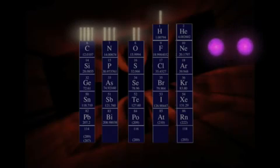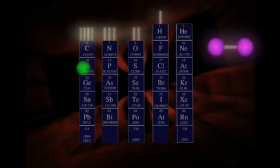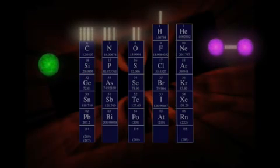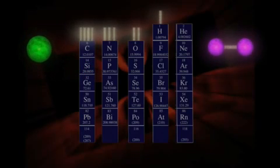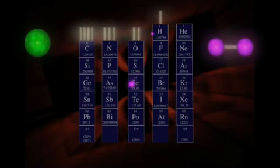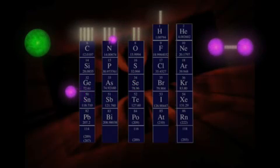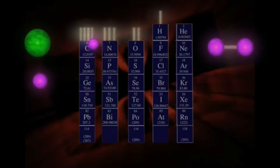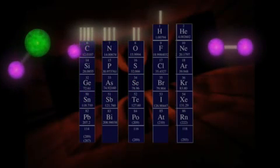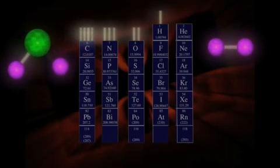Another example is water. We can see that oxygen wants to make two bonds, because it is in the second column from the right. So it can get together with two hydrogen atoms, which each want to make one bond. And all three atoms are happy.